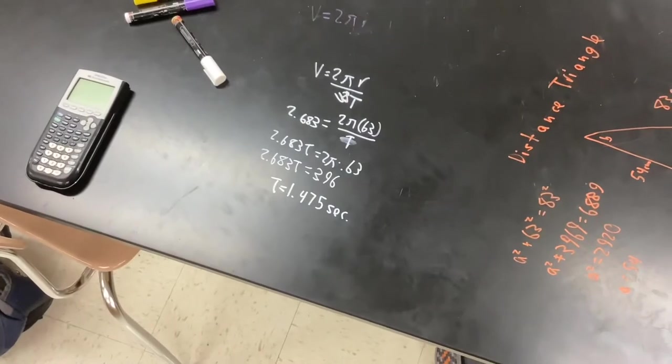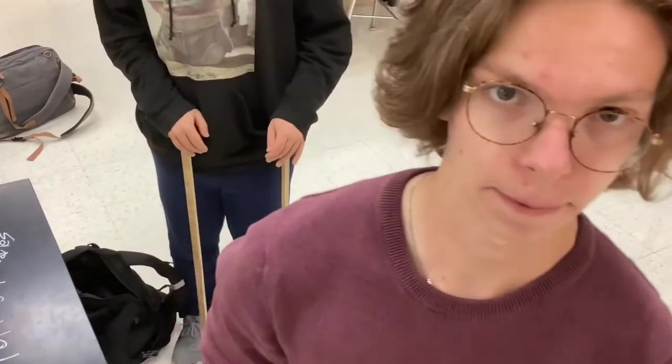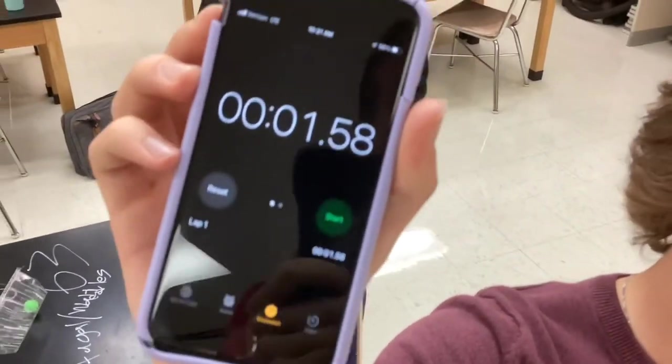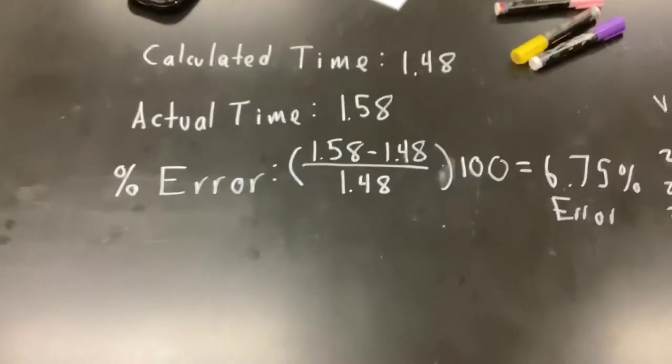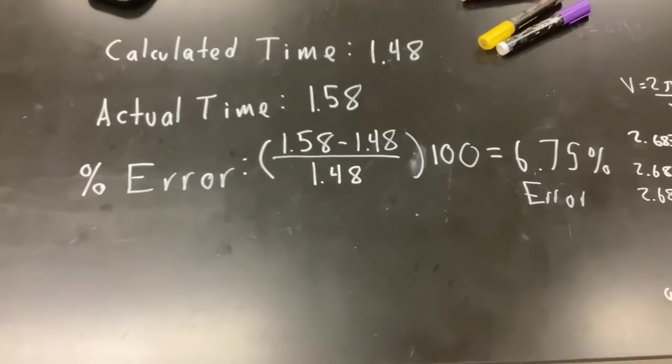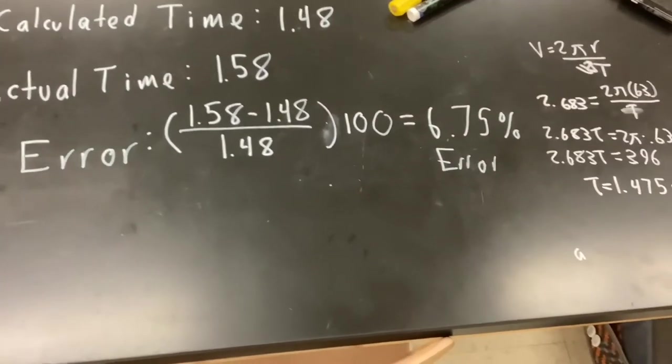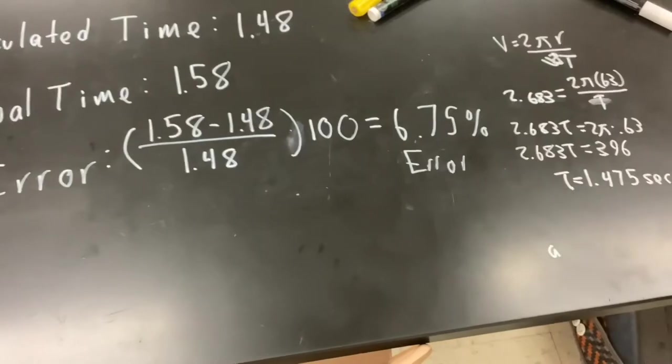Estimated time was 1.747, which we could round up to 1.48. Yeah. 1.58. All right. So our calculated time was 1.48 seconds. The actual time was 1.58 seconds. And then using the power of math, we were able to find out that a percent error was 6.75. Which is actually- Thank you.